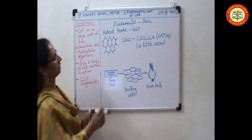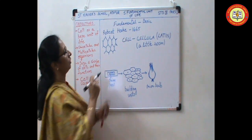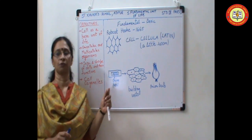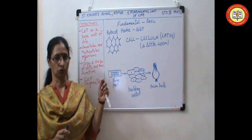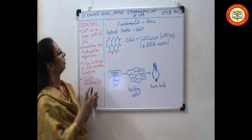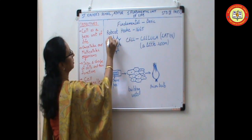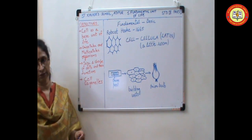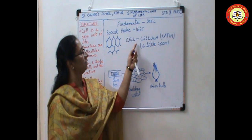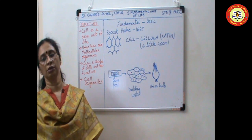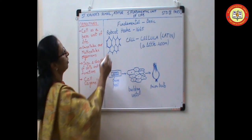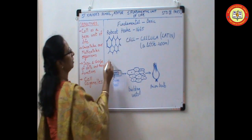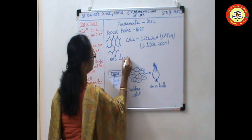Fundamental means basic, basic unit of life. The cell was first discovered by Robert Hooke in 1665. While observing a thin slice of cork through a self-designed microscope, he saw small hollow structures. These structures resemble a honeycomb. So he named these structures as cell. The cell is derived from the Latin word cellula, means a little room. Robert Hooke could observe only the outer wall of the cell because cork cells are not live cells.